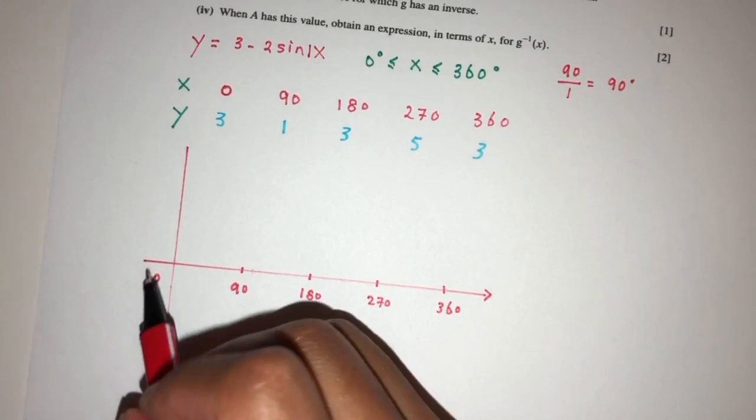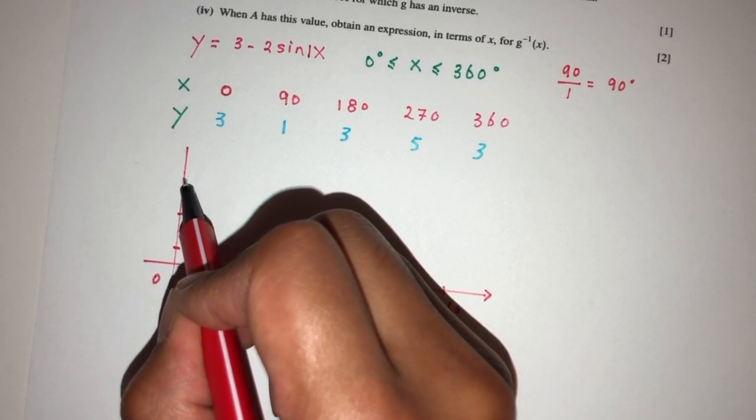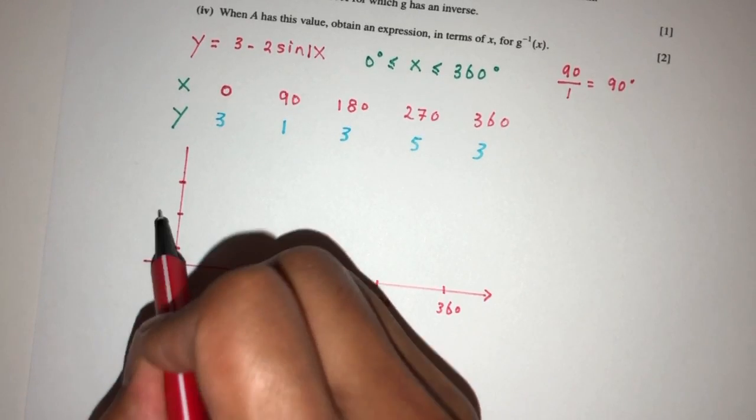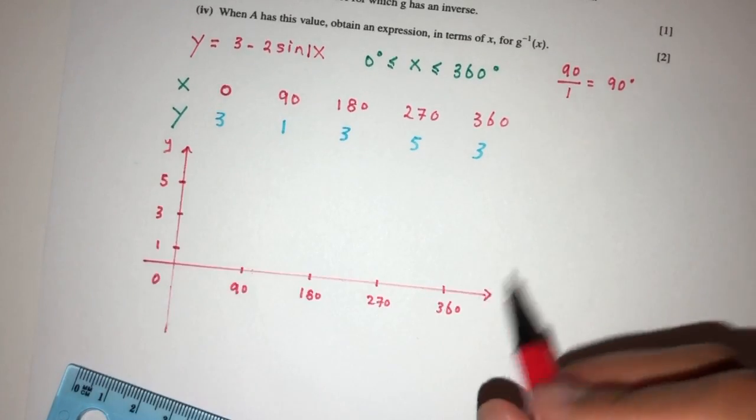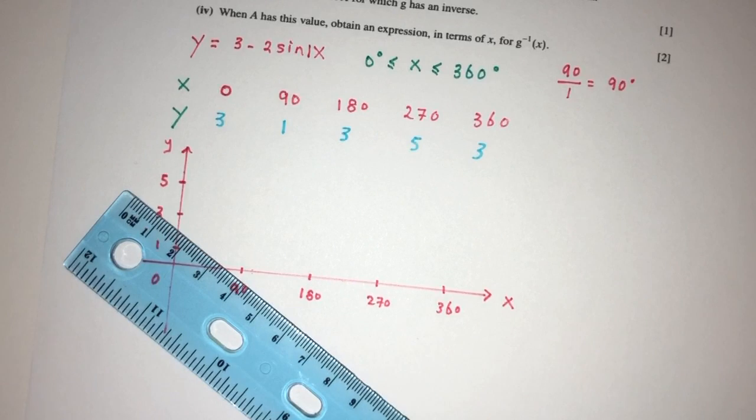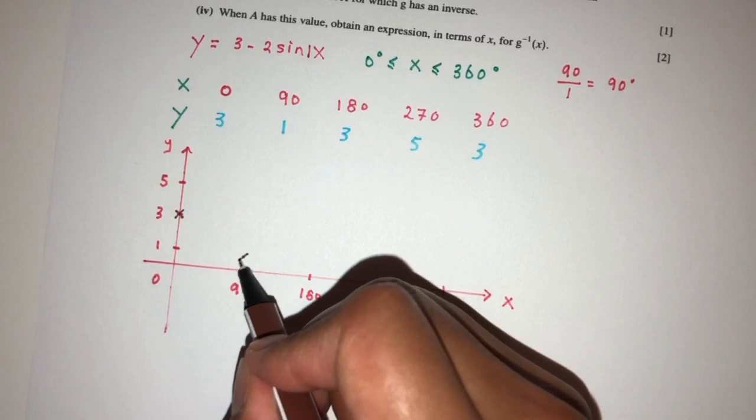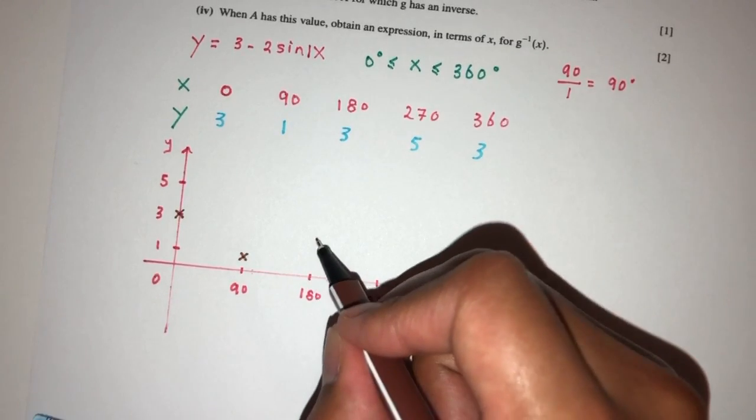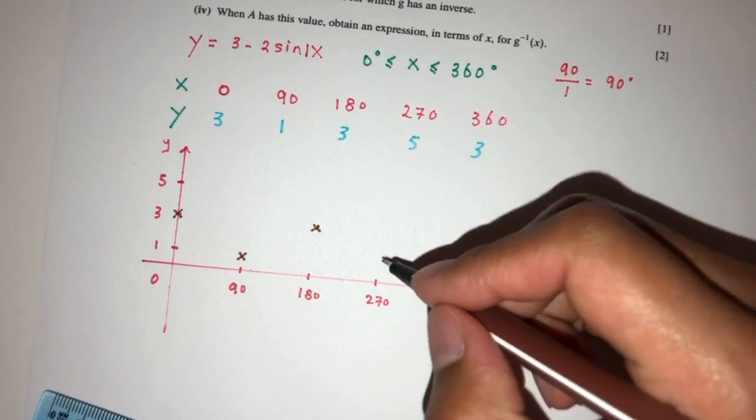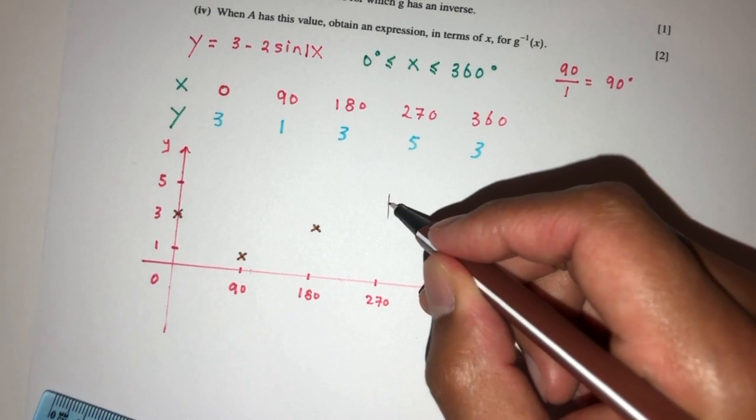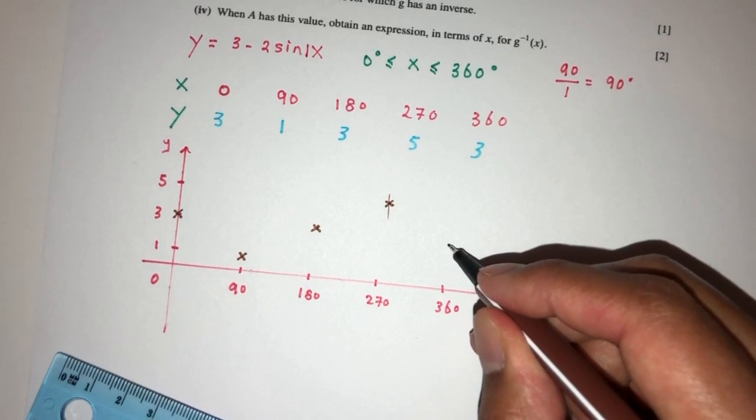Now the value of, let's say 1 is here, let's say 3 is here, and 5 is here. So 1, 3, 5. That will be y, and that will be x. So first one, 0, 3, will be right here. 91 will be somewhere over here. 183, somewhere over here. Then we have 270, will be 5, that will be somewhere over here. Then we have this, that should be 3, somewhere over here.